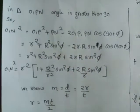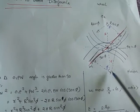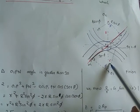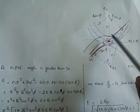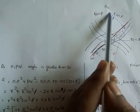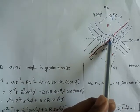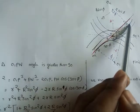What is O1P? O1P is nothing but your radius. What is your value of PN? This will be R sin phi and R cos phi.